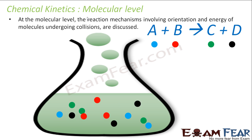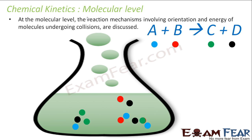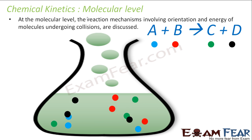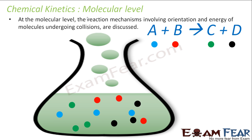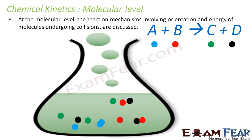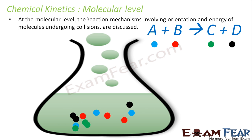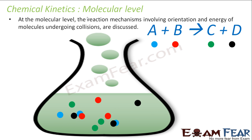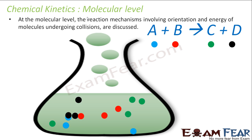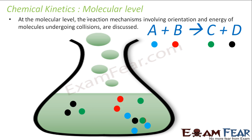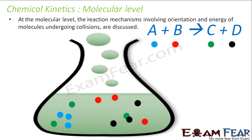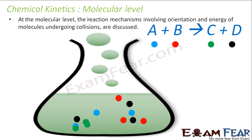In chemical kinetics, we will discuss the reactions both at the macroscopic level and the molecular level. In this whole chapter, we will first start with the macroscopic level — talking about the change in product or reactant concentration. Once we understand the concepts and how the rate of change of product is linked with other parameters, we will start at the molecular level about how the molecules interact and the product gets formed.